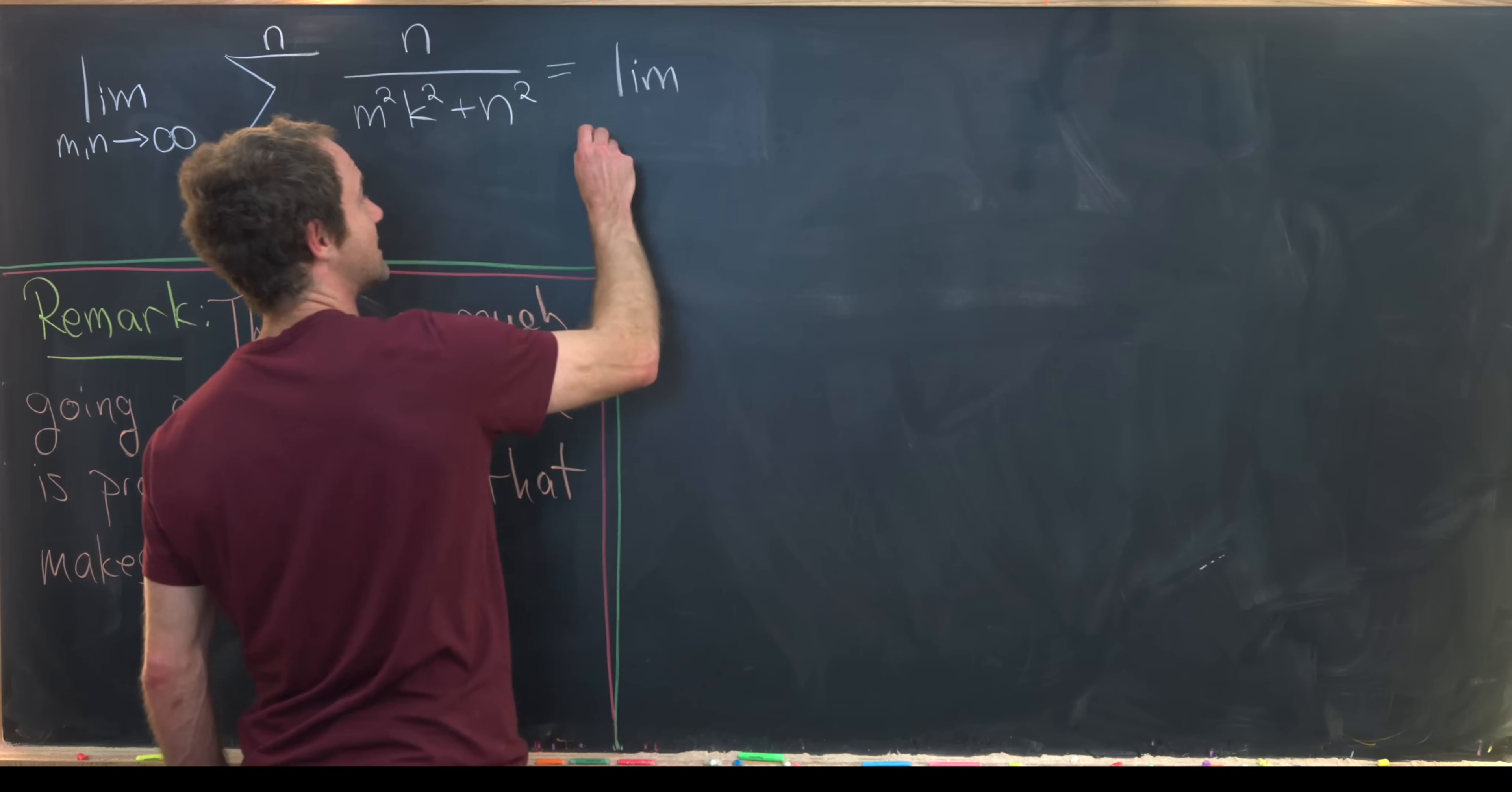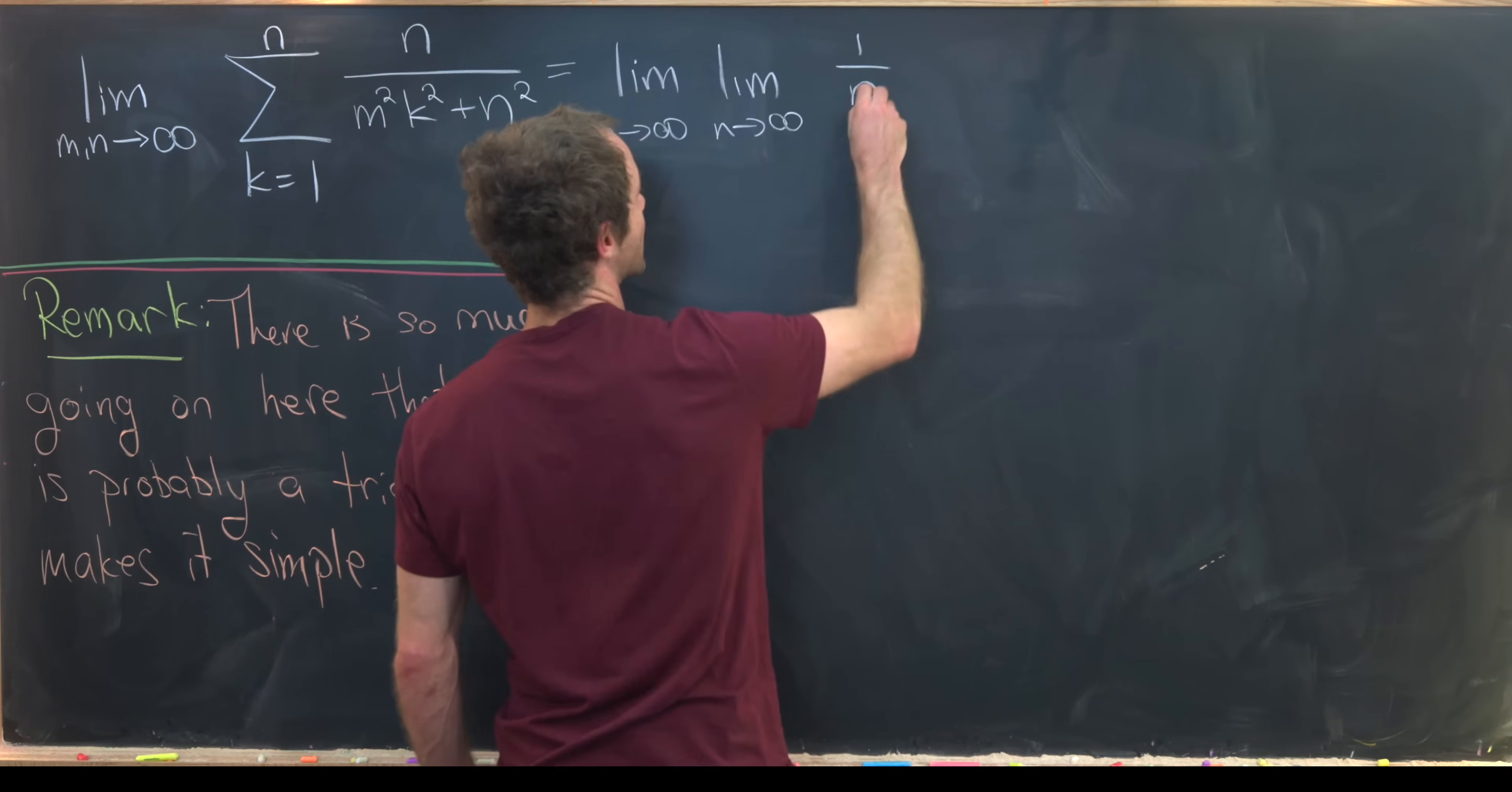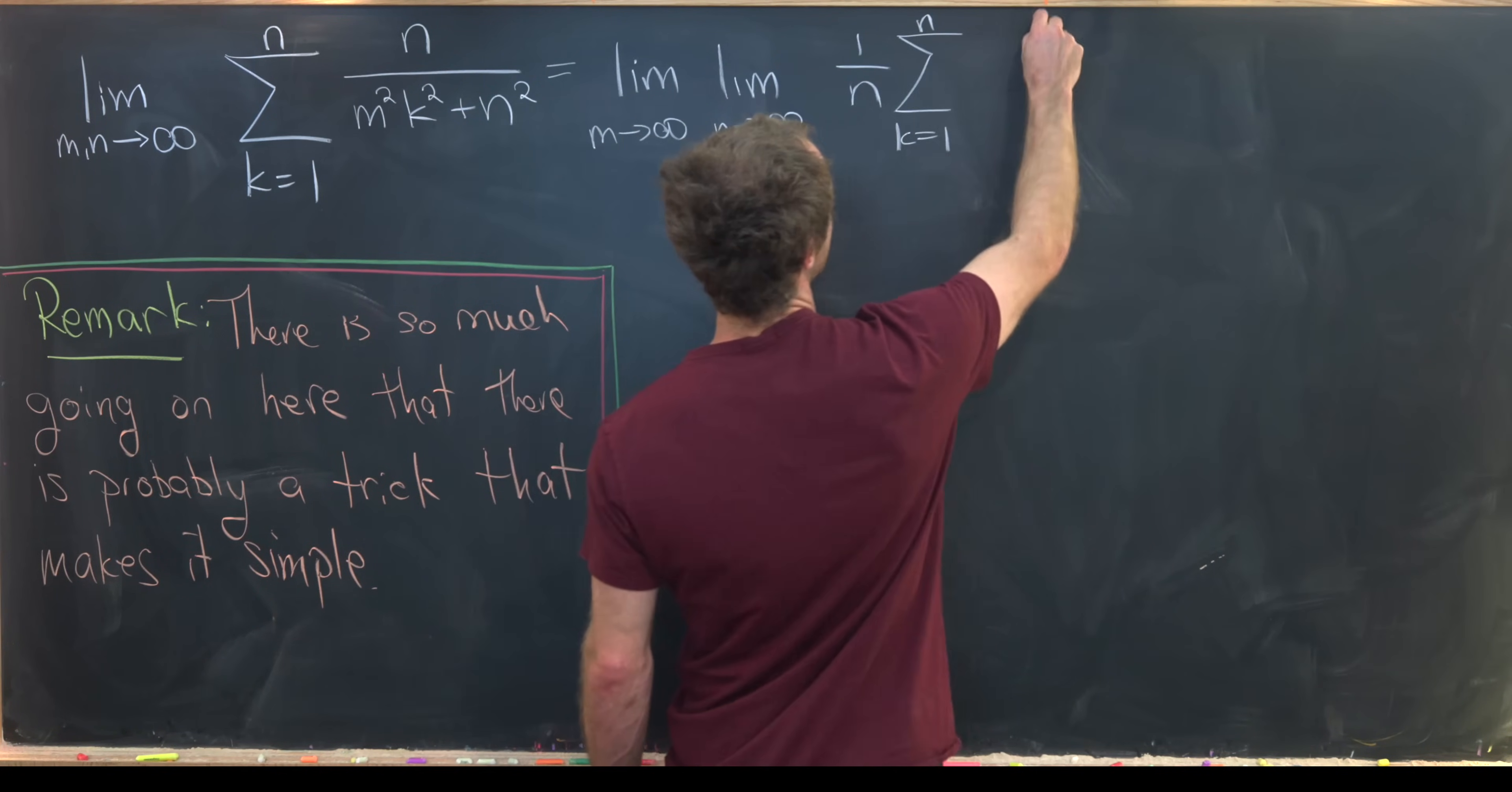I'm going to rewrite this as the limit as m goes to infinity of the limit as n goes to infinity of 1 over n times my sum as k goes from 1 up to n of 1 over m squared k squared over n squared plus 1.